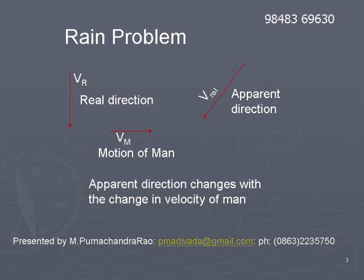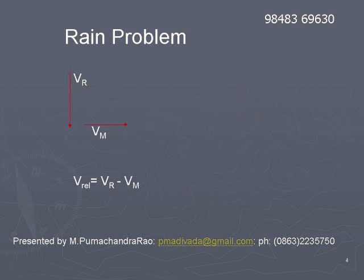This apparent direction changes with the speed with which we travel horizontally. Let us try to understand this using vectors. If vr represents the rain vector, vertically downwards, and vm represents the velocity of man horizontally,